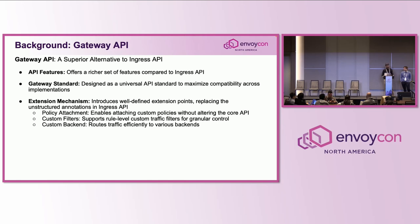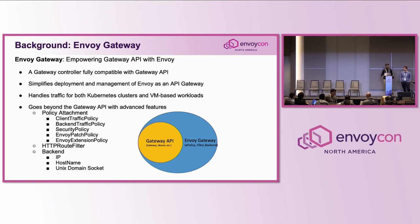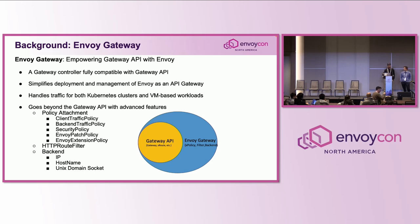You also have custom filters and custom backends. Envoy Gateway is a fully compatible Gateway API implementation — it's a controller for managing, deploying, and configuring Envoy as an API gateway. It does all the heavy lifting and can handle traffic for both Kubernetes and VM-based workloads. It doesn't stop at Gateway API; it also introduces advanced features, so you can think of it like a superset of Gateway API.